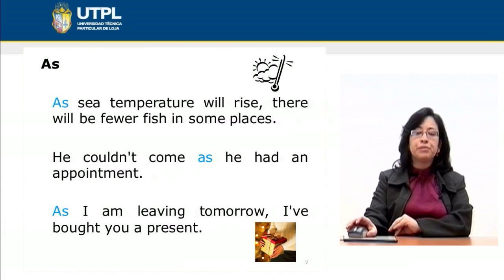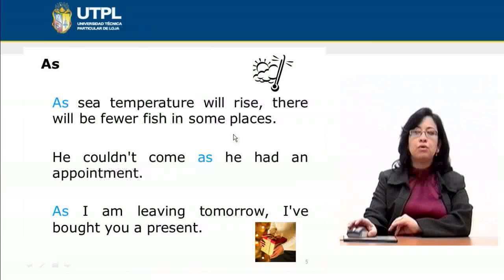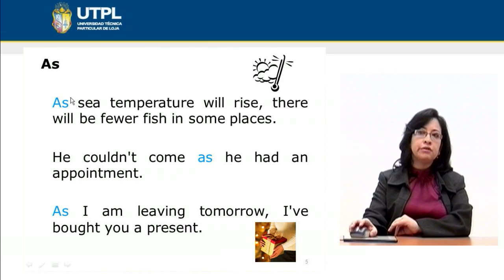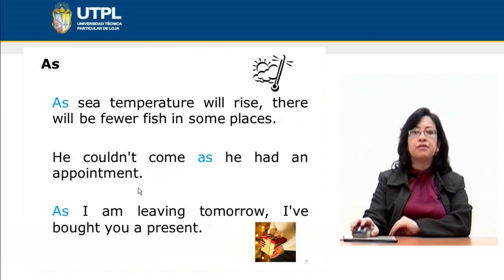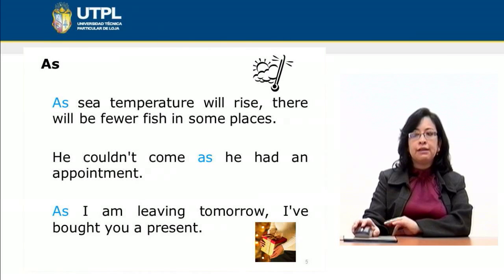We can also use the word 'as' to present cause. For example: 'As sea temperature will rise, there will be fewer fish in some places.' The cause is at the beginning — sea temperature will rise — and the result follows. Then: 'He couldn't come as he had an appointment.' So the reason he couldn't come is he had an appointment. And also: 'As I am leaving tomorrow, I bought you a present.' We have the reason and the result.